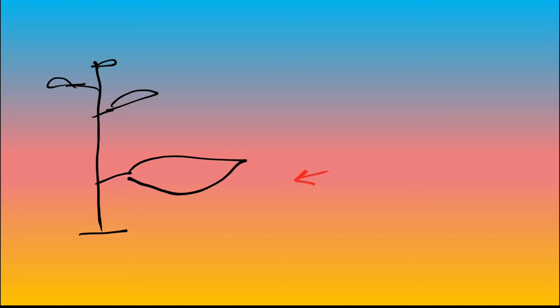जैसे कि यह plant है, यहाँ पर lower leaf होती है और बाद में यह उपर के leaf में जाता है। तो यह जो disease है वो पहले lower leaves में दिखाई देता है। क्योंकि lower leaves में sugar content low होता है और यह जो pathogen है, Alternaria, उसे low sugar चाहिए होता है। इसलिए जो पहला symptom है वो lower leaves में start होता है और necrotic spots बनते हैं।